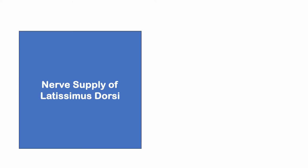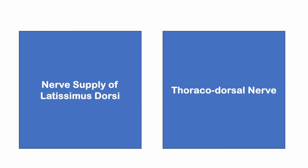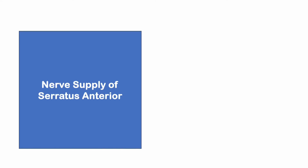The nerve supply of latissimus dorsi is the thoracodorsal nerve. This is very easy to remember.